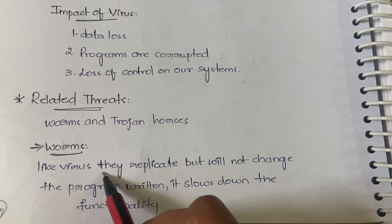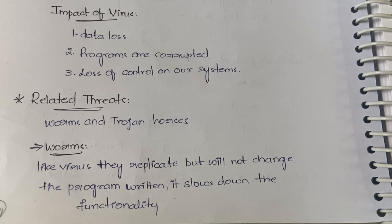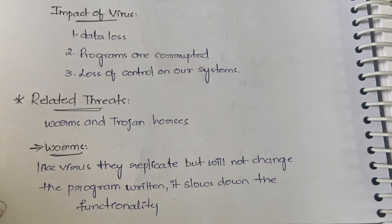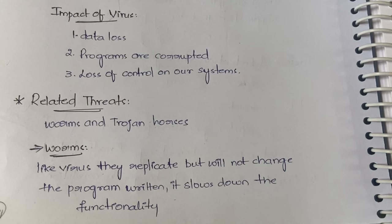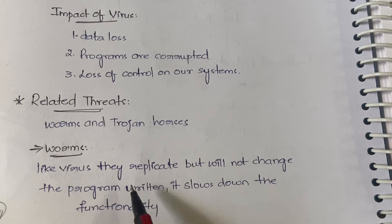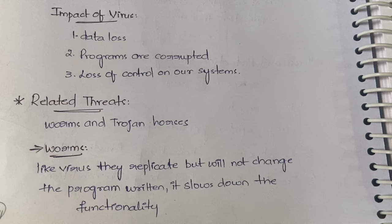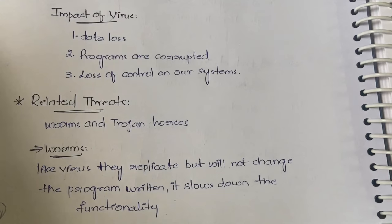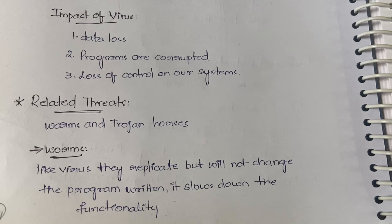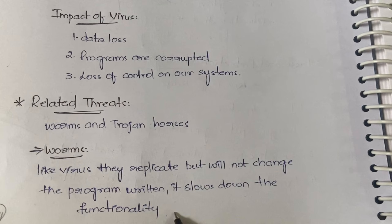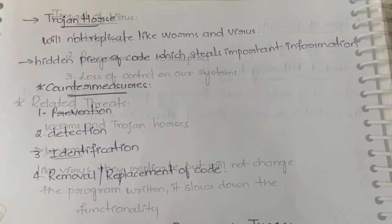A worm, like a virus, will replicate — similar to how a coronavirus particle entering the body multiplies to produce many particles. So worms also replicate, but they do not change the functionality or the program code. They just slow down the system. For example, if you click one plus two, the result is still one plus two, but it happens slowly. A worm slows down the functionality without changing it.